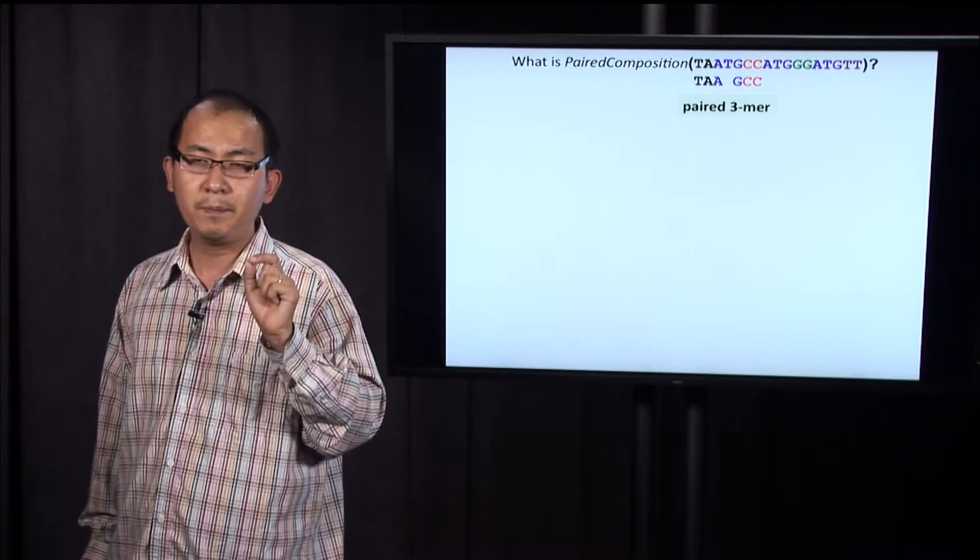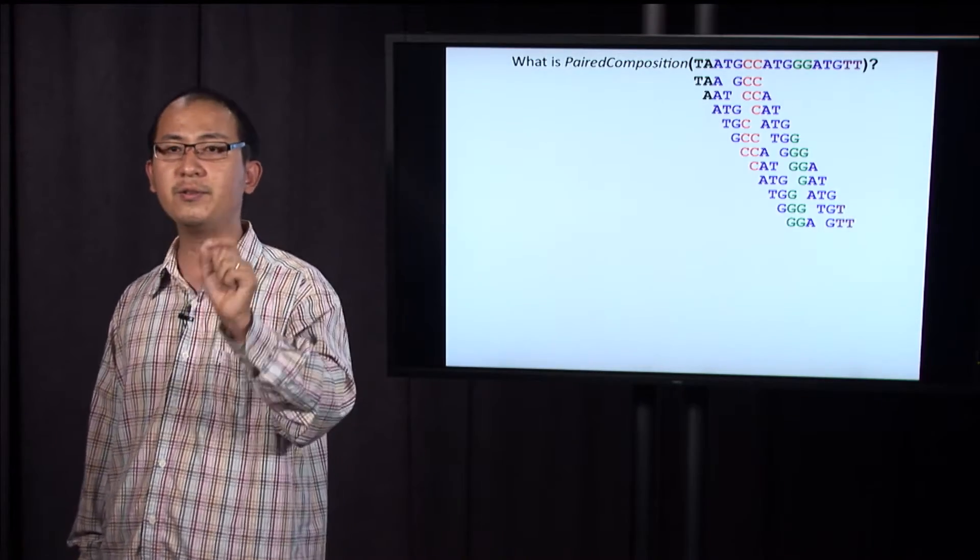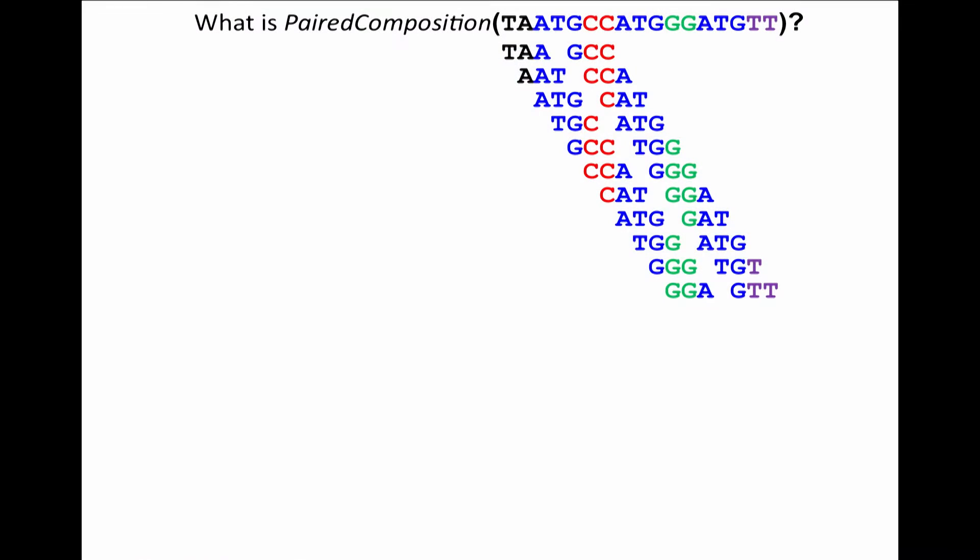Given a string, a paired k-mer composition of a string is a set of all paired k-mers generated from this string. Well, because we don't have space, let's represent a pair of k-mers as a two line expression like this.